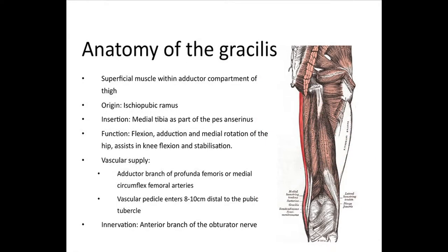The gracilis is the most superficial muscle within the adductor compartment of the thigh. It originates from the ischiopubic ramus and inserts inferior to the medial condyle of the tibia as part of the three tendons collectively known as the pes anserinus. It is a unipennate muscle.